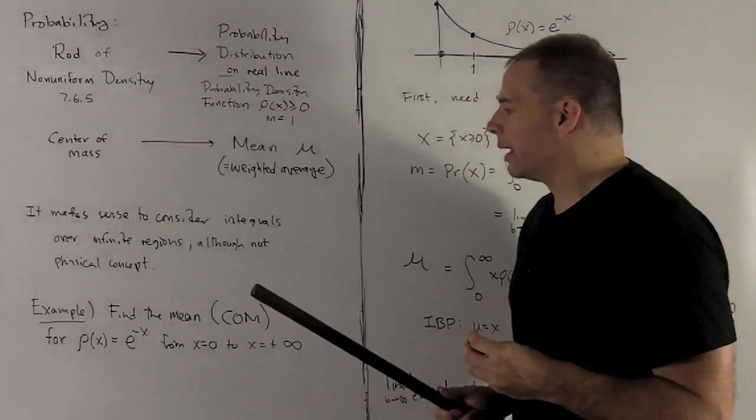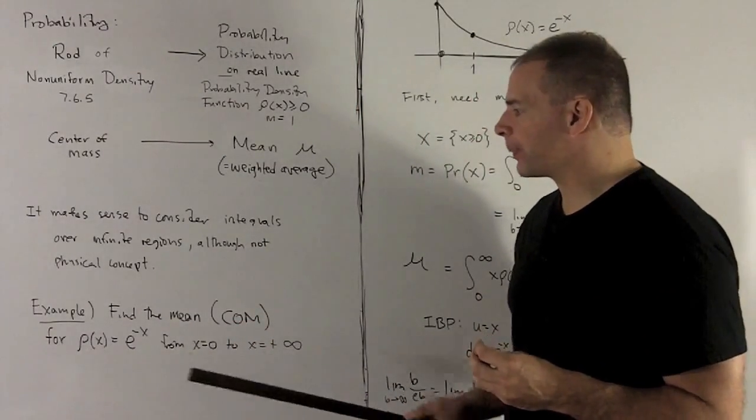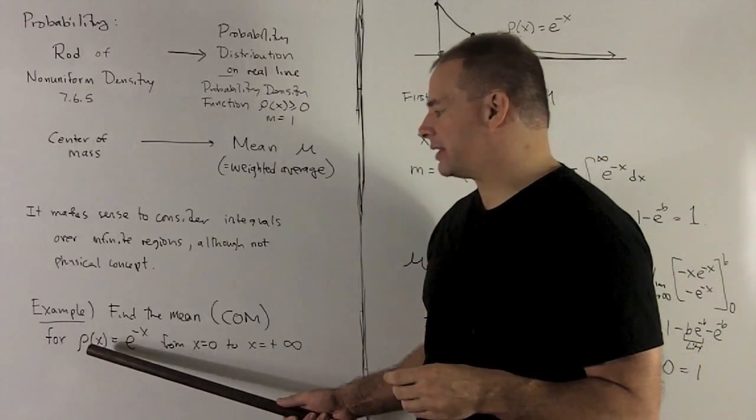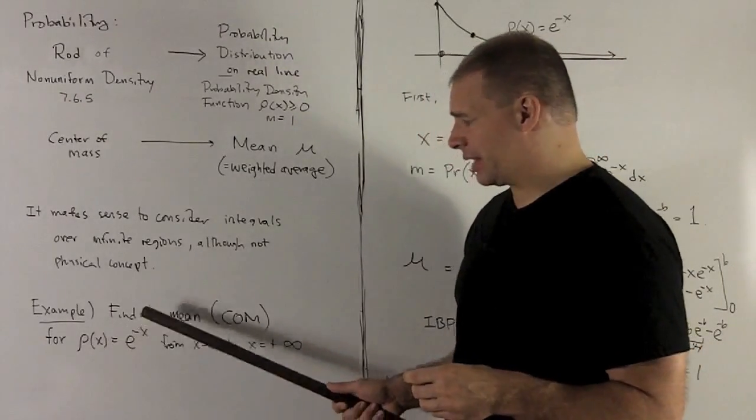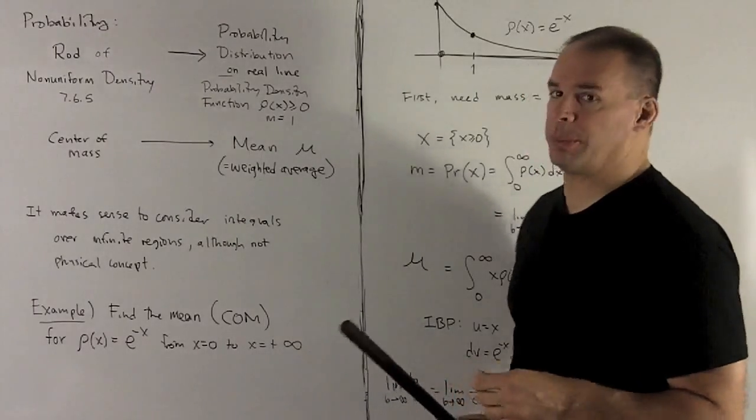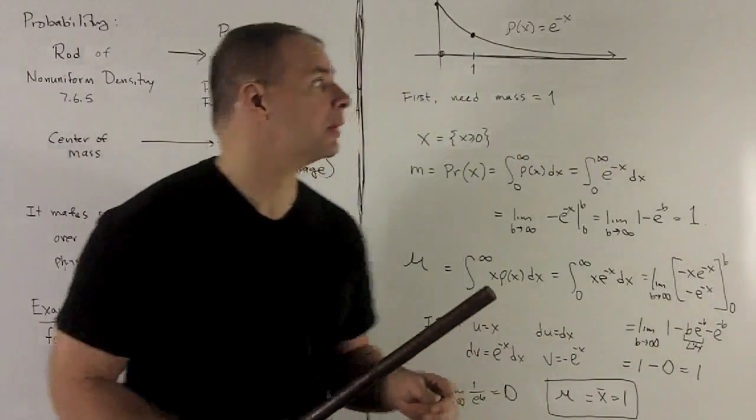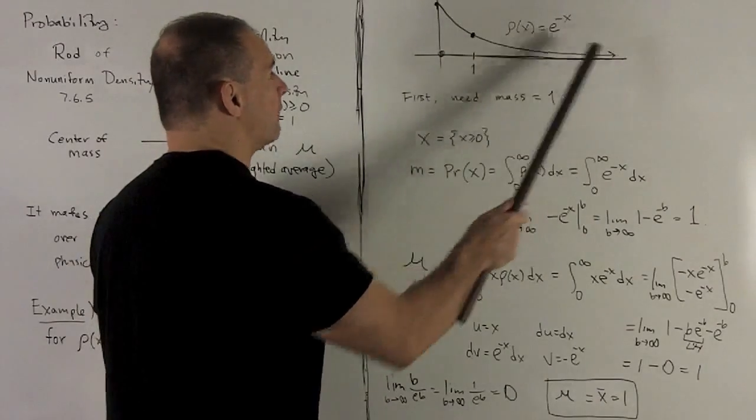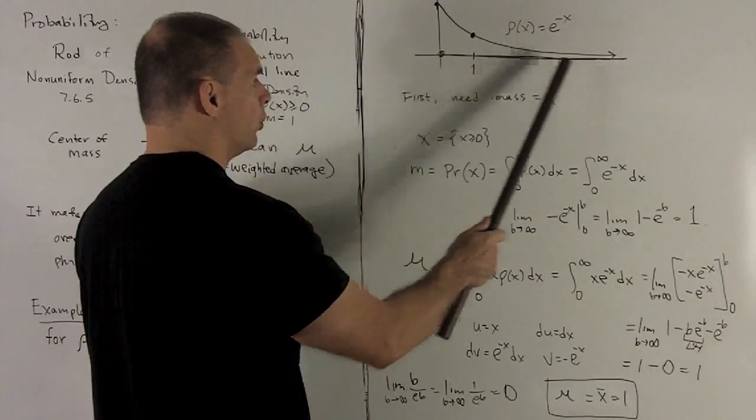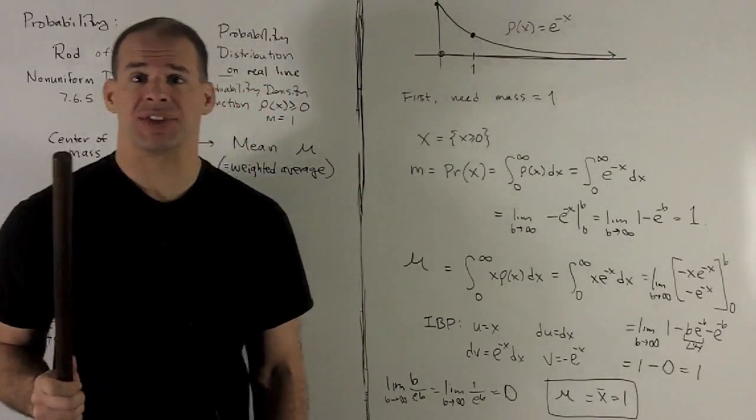So let's take a look. My example is going to be, find the mean, center of mass, for the probability density function, e to the minus x, over the region from x equals zero to x equal to plus infinity. Here's the picture for this. I draw on my graph. We have our density function.